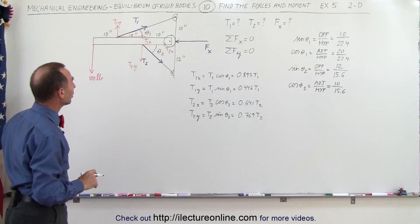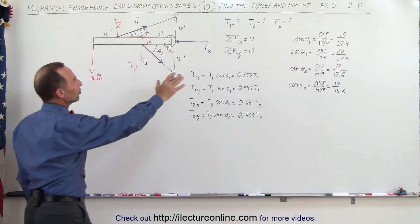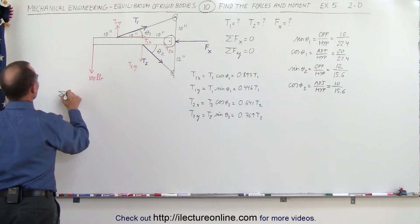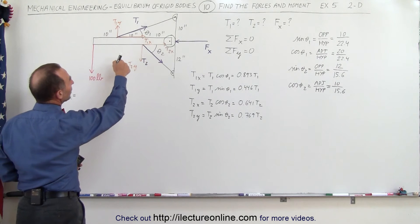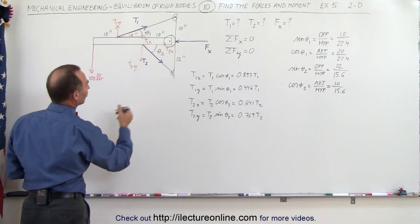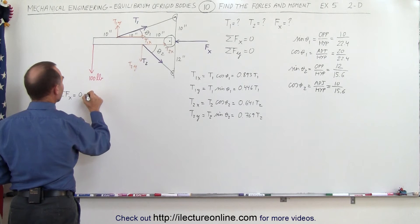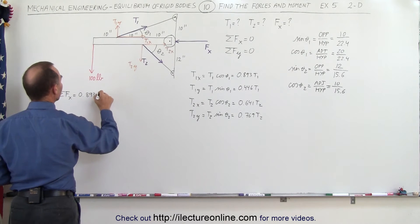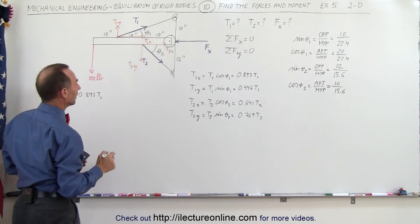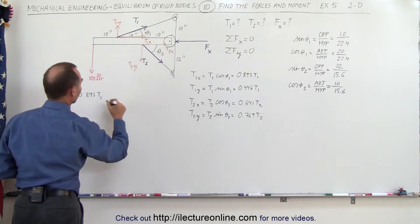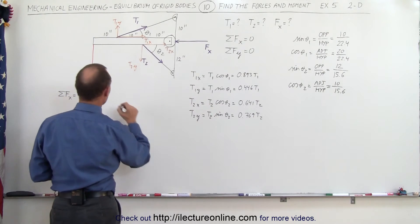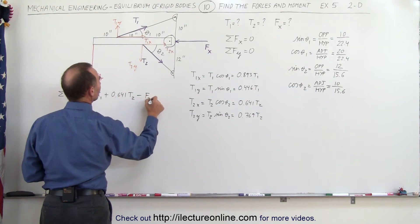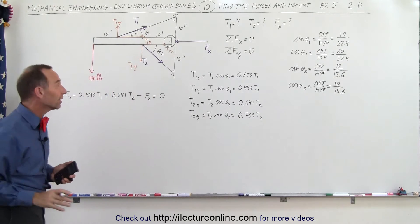Now we're ready to use the equilibrium equations. The sum of all forces in the x-direction equals zero: we have T1x pointing to the right, so positive 0.893 T1, plus T2x which is positive 0.641 T2, minus F_x, and that adds up to zero.